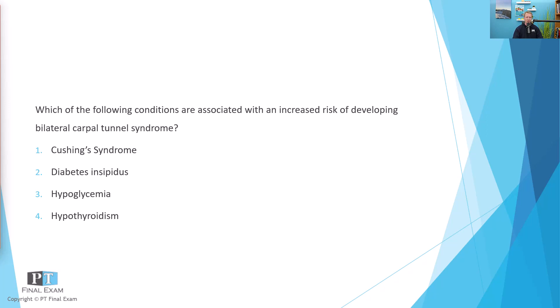Which of the following conditions are associated with an increased risk of developing bilateral carpal tunnel syndrome? Number one: Cushing syndrome. Two: diabetes insipidus. Three: hypoglycemia. Or four: hypothyroidism.